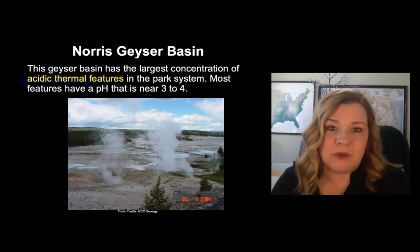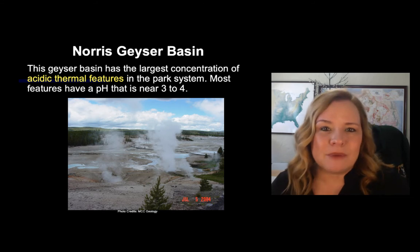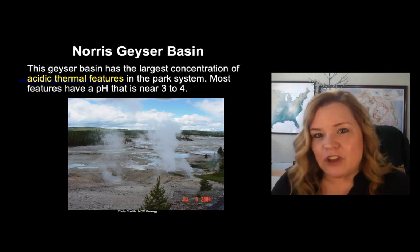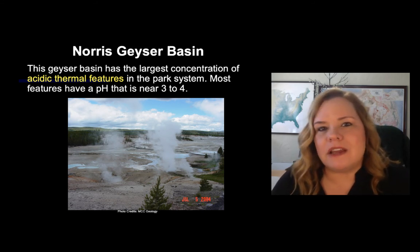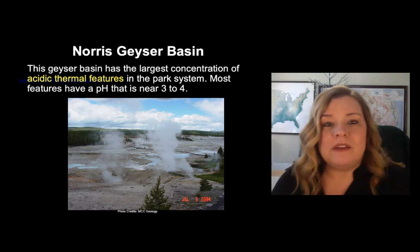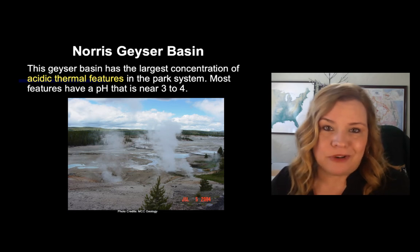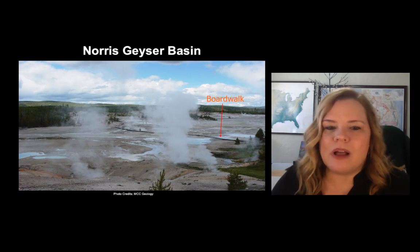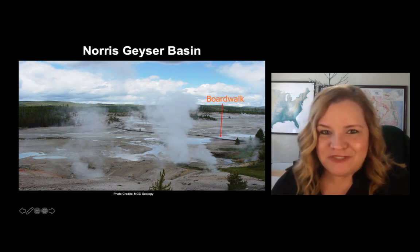The most acidic feature in the park is Sulphur Caldron, on the other side of the park. But in terms of geysers, Norris has the most acidic ones — most with a pH of 3 to 4, which is extremely low. That's why it's imperative to stay on the boardwalk. Acid has even eaten through parts of the boardwalk from steam coming up through fumaroles. I want you to notice the light color of all the geological material — it's felsic, it's rhyolitic.